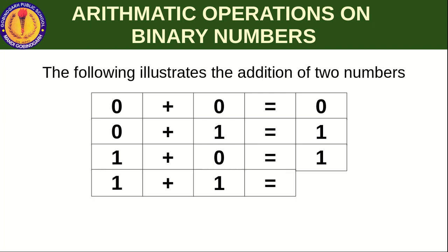Now, one plus one is equal to what? In decimal numbers, one plus one is two. But in binary we can't write any digit other than zero and one. So we have to write the binary equivalent of two, which is 1 0. So one plus one equals 1 0 — that is, zero with a carry of one. Keep this in mind.